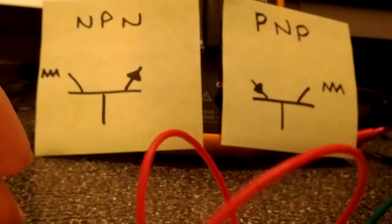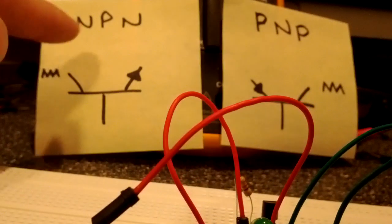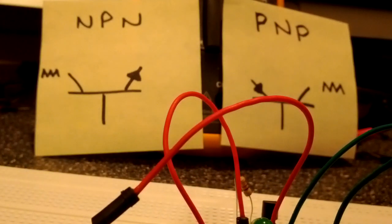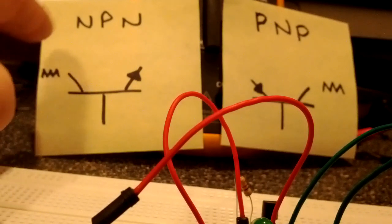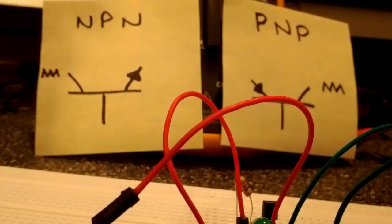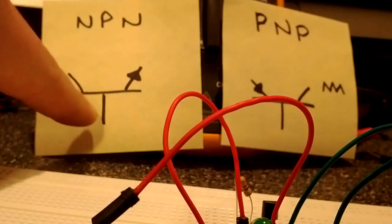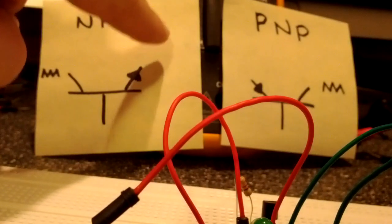If you have an NPN transistor, you can think of the N and the P as kind of negative and positive. You're going to have current flowing from positive to negative conventionally, so when I look at them I think NPN, so current has to flow from the base to the emitter here.